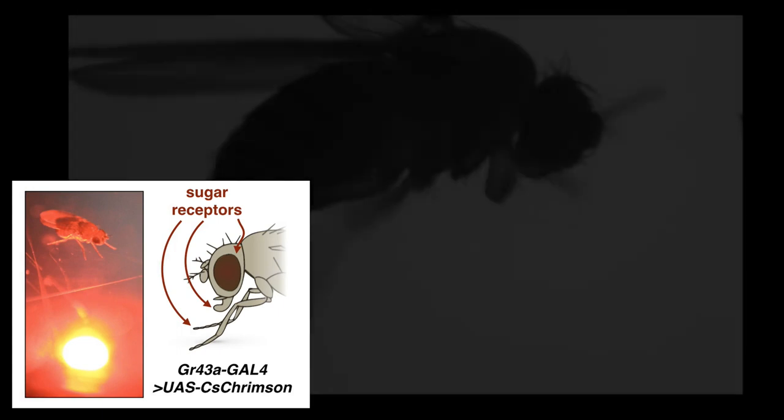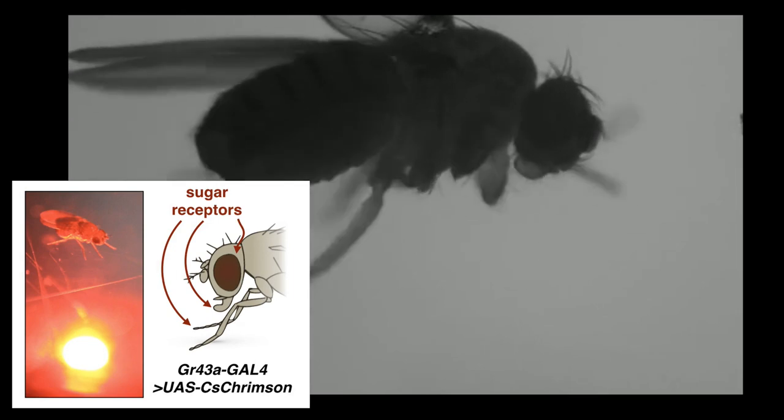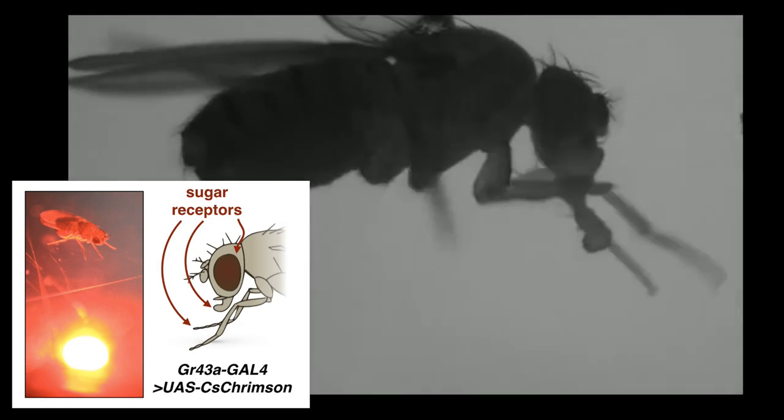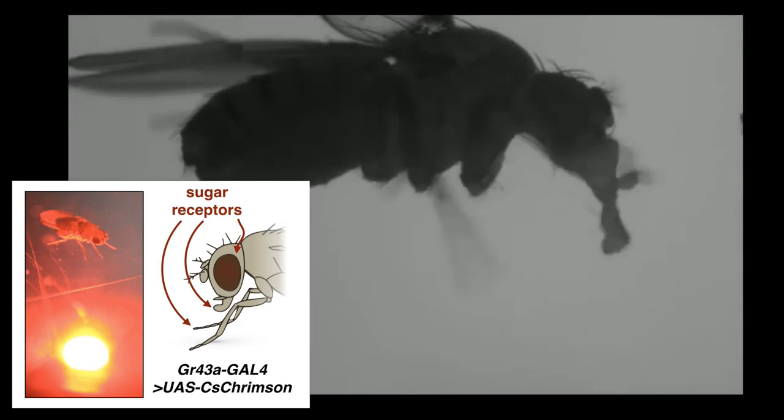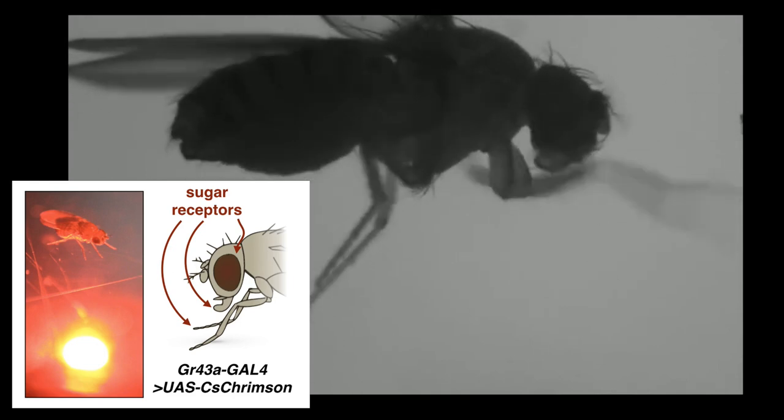For example, we activated sugar-sensing neurons in flies that expressed a light-sensitive ion channel in GR43A-Gal4 cells. As expected, when we activate these cells, flies extend their proboscis, which is a well-characterized appetitive reflex. But the real question was whether activation of sugar-sensing neurons would trigger a local search.